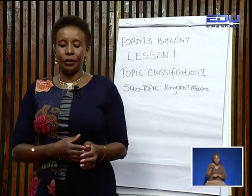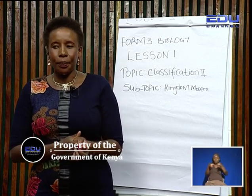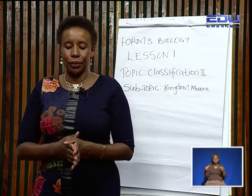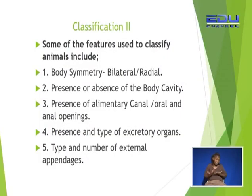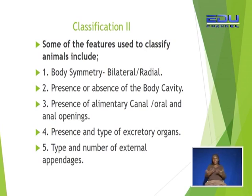We have different features that are used to classify living organisms. Some of the features used to classify animals include, number one, body symmetry. Some living organisms have bilateral symmetry, meaning they can be divided into two equal parts. While others have radial symmetry, meaning they can be divided into several equal parts.